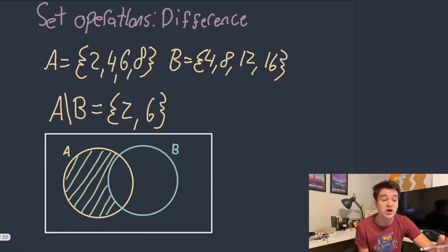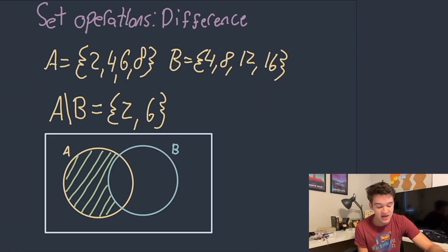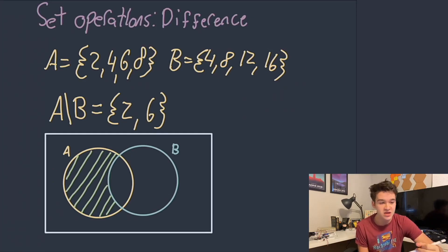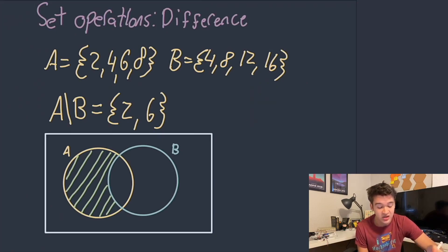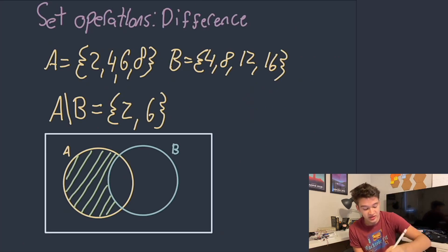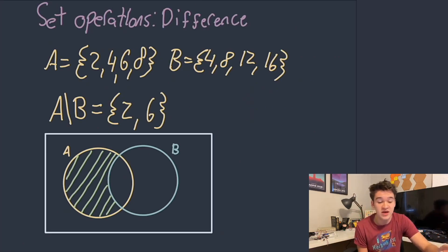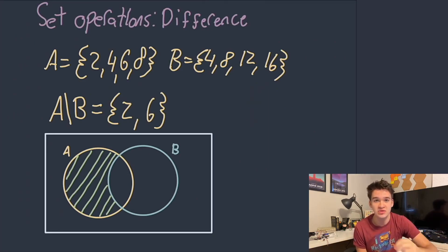Next we're going to talk about another set operation called the difference. This is represented by a backslash, and it essentially says: I want all of the elements that are in this set but are not in this set. If we have A difference B, it's going to be {2, 6} because 2 and 6 are the only elements that are in A but are not in B. We can shade that in on our Venn diagram, and you could also represent it as the intersection of A and the complement of A union B — essentially all the elements of A without the elements of B.